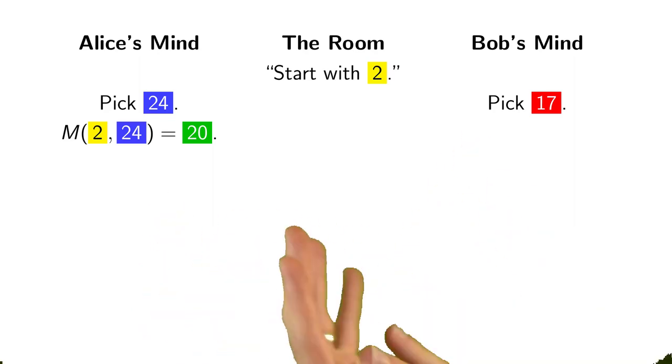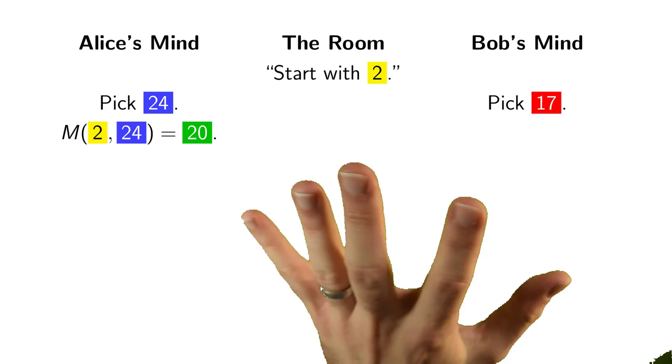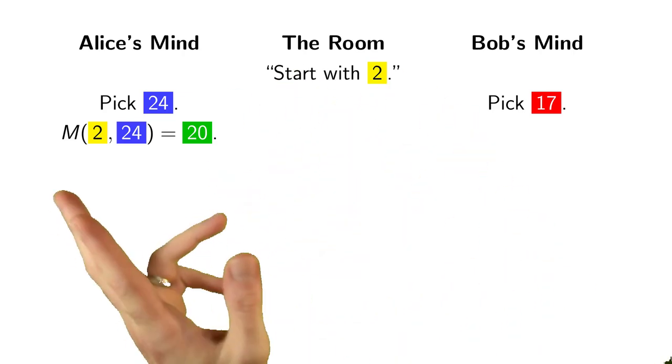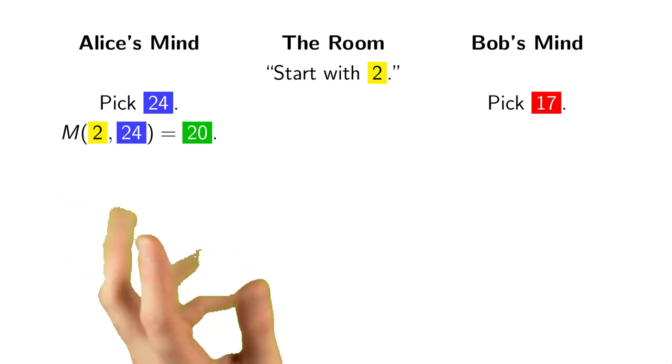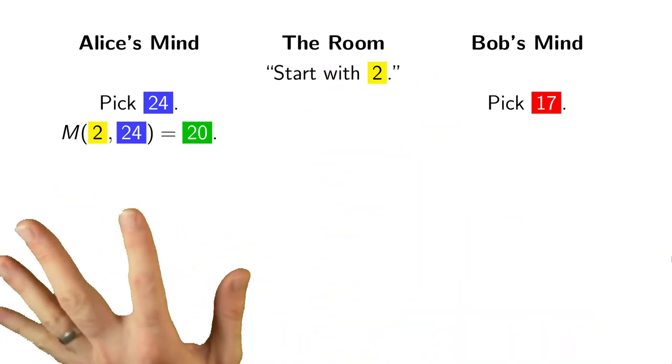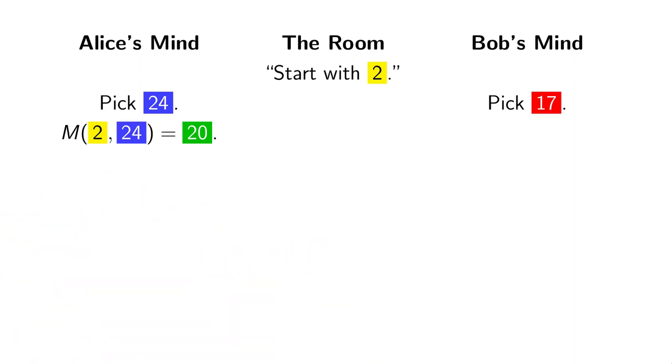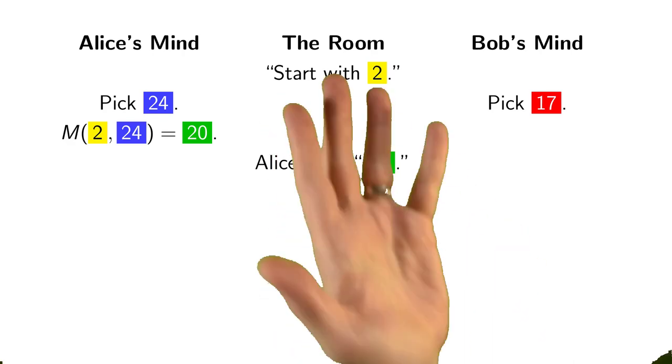And we imagine that we've got a sort of a mixing function, M, which takes in two numbers and mixes them together somehow to produce a new number. So here, the room, the public knowledge, was this number 2 that Alice and Bob agreed on. And Alice had picked this random secret number 24. She'll mix the public knowledge 2 with her secret number 24. And let's suppose that after that mixing process is done, she gets the number 20. She'll announce that number 20 to the room.